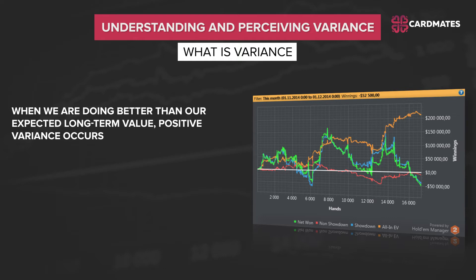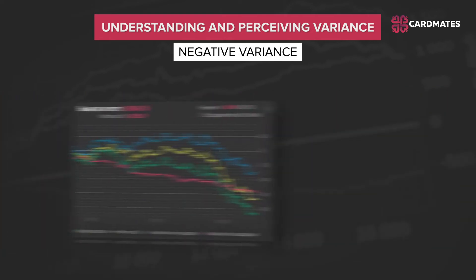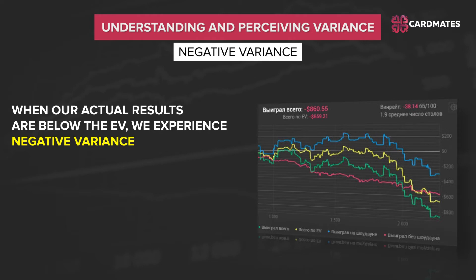Variance is the series of ups and downs that occur when we are playing poker — the difference between individual performance in the short-term and the average performance expected over the long-term. When our actual results are below the EV, we experience negative variance. This happens if we are doing worse than statistics would suggest. When poker players experience negative variance, you will occasionally hear phrases like "I have a black streak" or "I caught a downswing." A negative variance occurs when, according to statistics, you are the favorite in the hand but unfortunately you lose. During periods when these losses start to accumulate, any player, good or bad, is exposed to the risk of quickly catching a downswing.